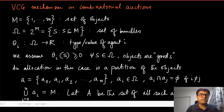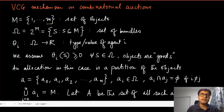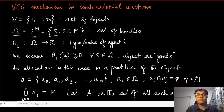Now that we know what a VCG mechanism is, let us discuss some of its properties in the context of combinatorial auctions. Just to remind you, a combinatorial auction is the kind of auction where every agent has some valuation on a combination of objects. There are m indivisible objects, and every agent has a valuation for a subset of these objects. We denote by the set omega the set of all possible subsets of m, which is the power set of m. We also use the term 'bundle' to denote a subset of these objects.